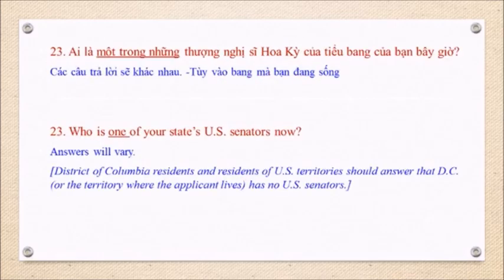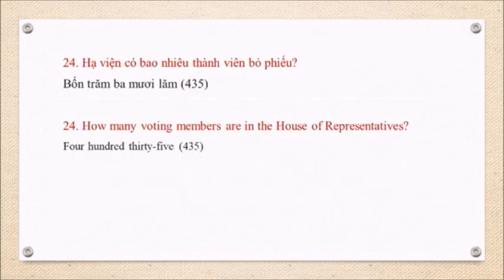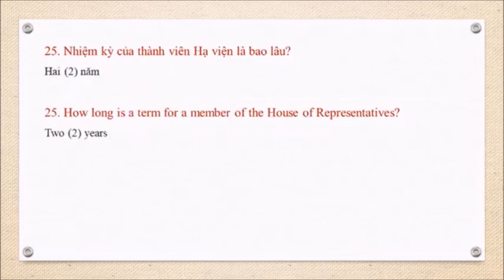Question 23: Who is one of your state's U.S. Senators now? Question 24: How many voting members are in the House of Representatives? 435. Question 25: How long is a term for a member of the House of Representatives? 2 years.